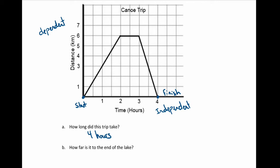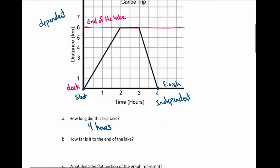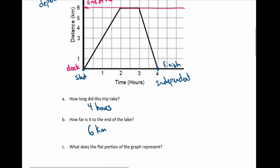If this is representing her trip, she paddles out until she hits a certain point, and then the distance starts to decrease. Since she's paddling to the end of the lake and back, the farthest distance she travels away from the dock must be the end of the lake. After that she turns around and heads back. We can see the highest point is six kilometers, so it's six kilometers to the end of the lake.